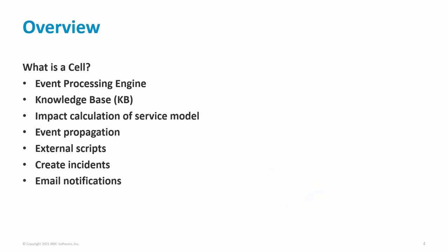So what exactly is the cell? In simple terms, it is an event processing engine. It can receive and enrich events from a variety of sources, such as an event adapter, an API, another cell, an integration, or a command such as MSend. It will analyze and process events based on event rules defined in the knowledge base (KB). If there is a service model present, the cell will perform impact calculations and propagate impact status to related components. It can propagate events to another destination, execute external scripts, create incidents in an integration such as ITSM, and trigger email notifications based on event criteria.